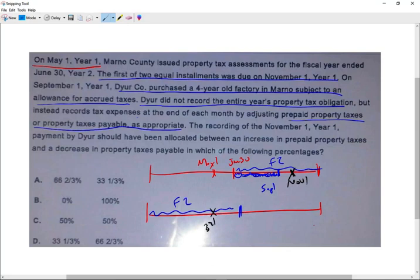The company did not record the entire year's property tax obligation, but instead record tax expense at the end of each month by adjusting prepaid property taxes or property taxes payable as appropriate. So when we paid in November, this is when we make the payment, when we paid in November, how are we going to allocate this payment?